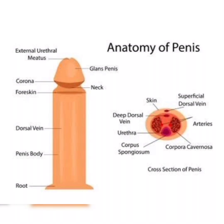Another external part is the scrotum. The scrotum is a pouch-like sack of skin located behind the penis that contains the testicles. It protects the testicles and helps regulate temperature, which is essential for sperm development. Muscles in the scrotum allow it to contract to maintain warmth or relax to cool the testicles.